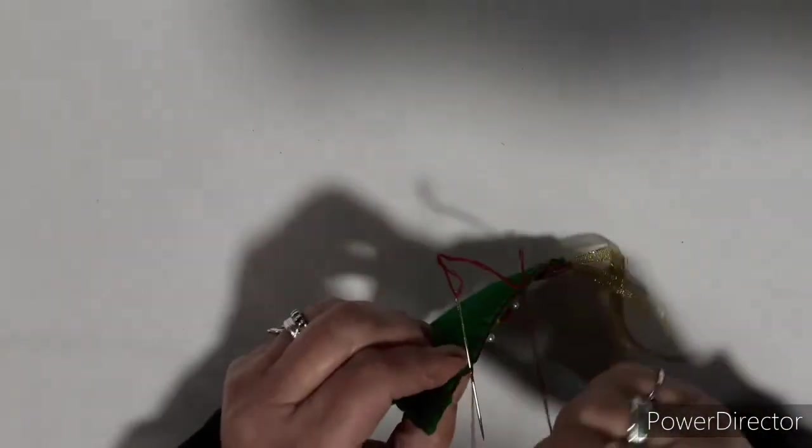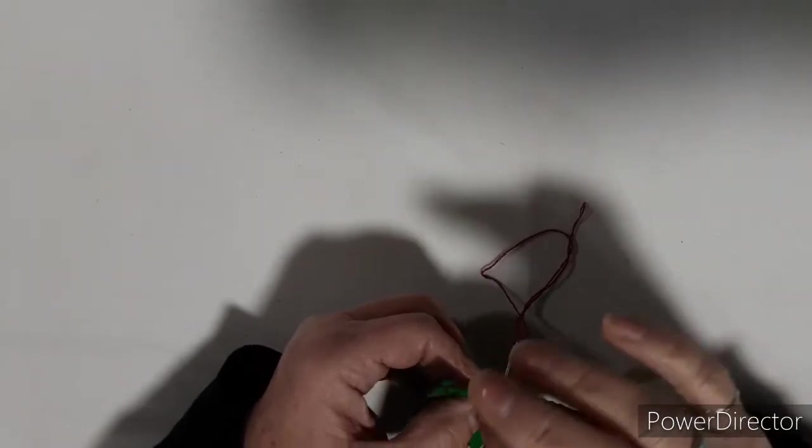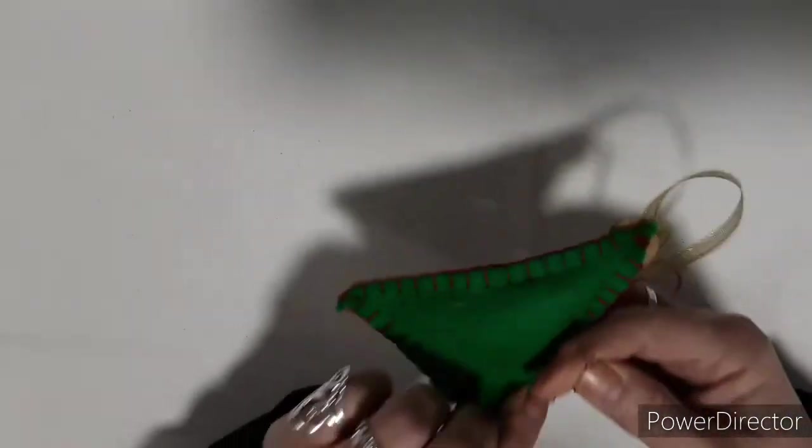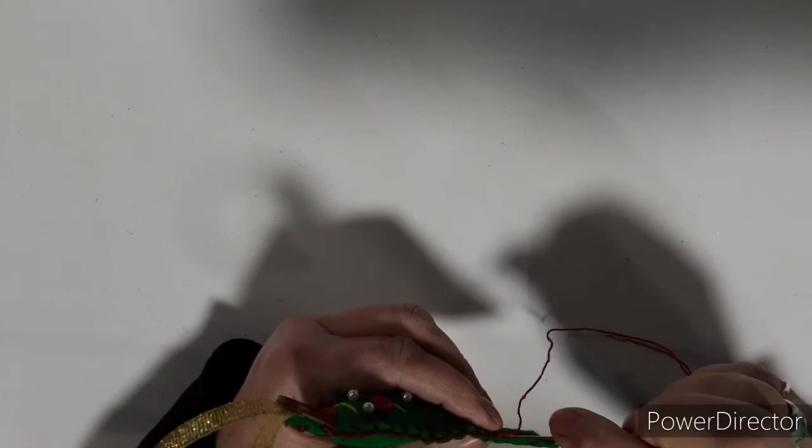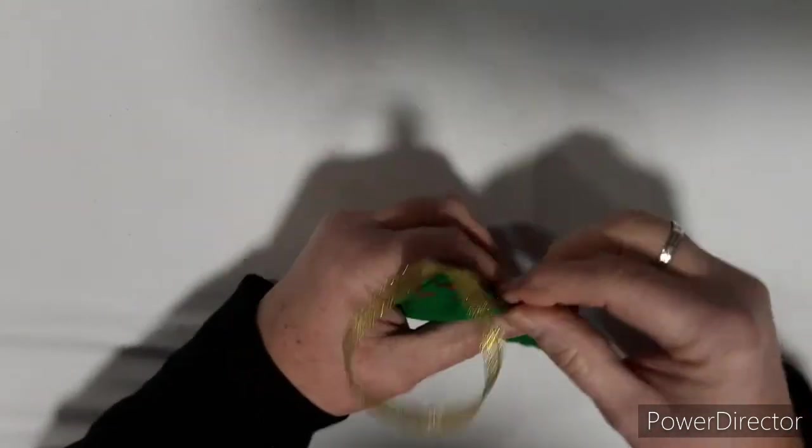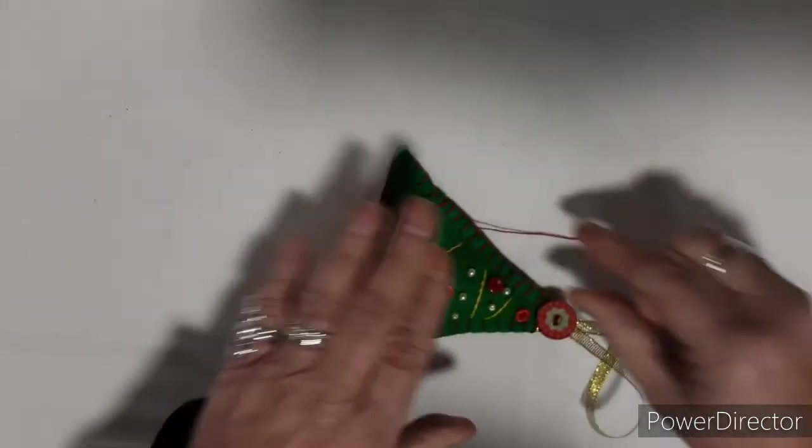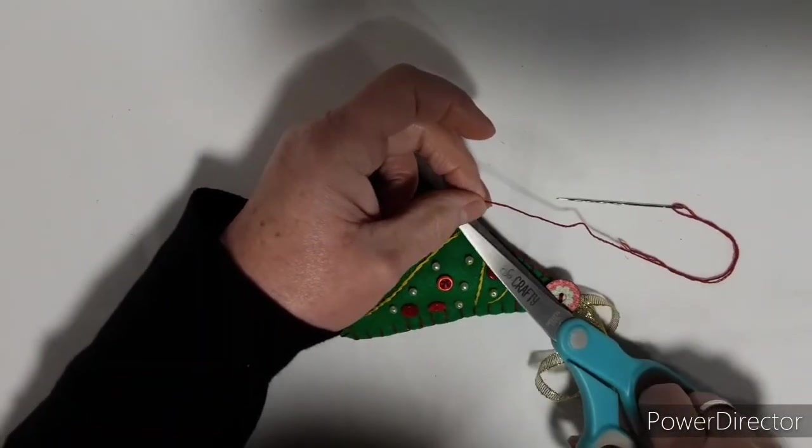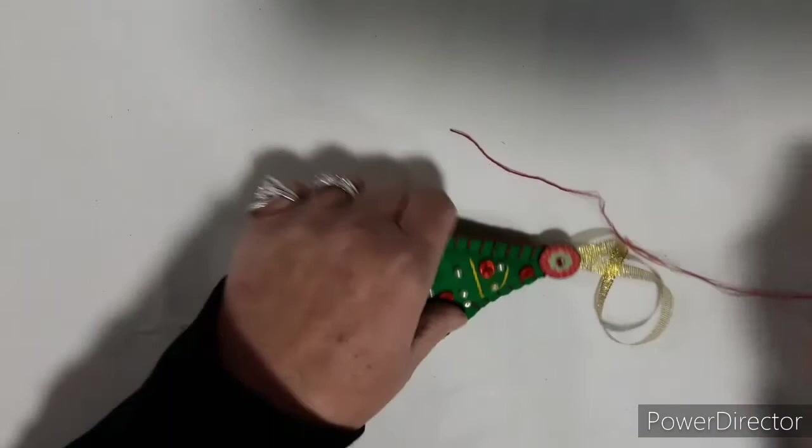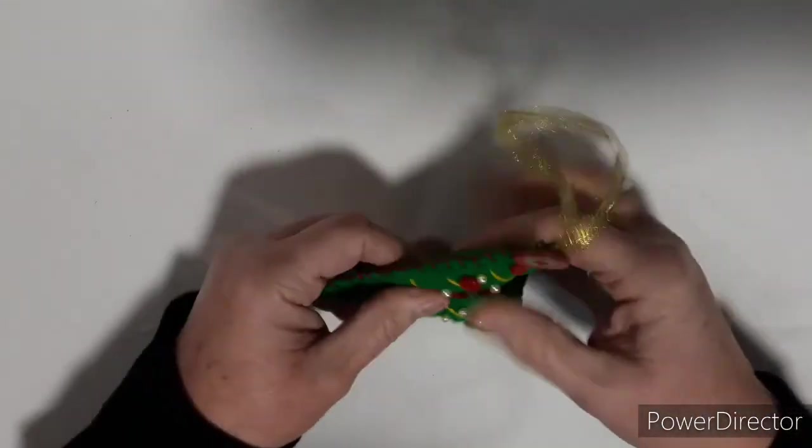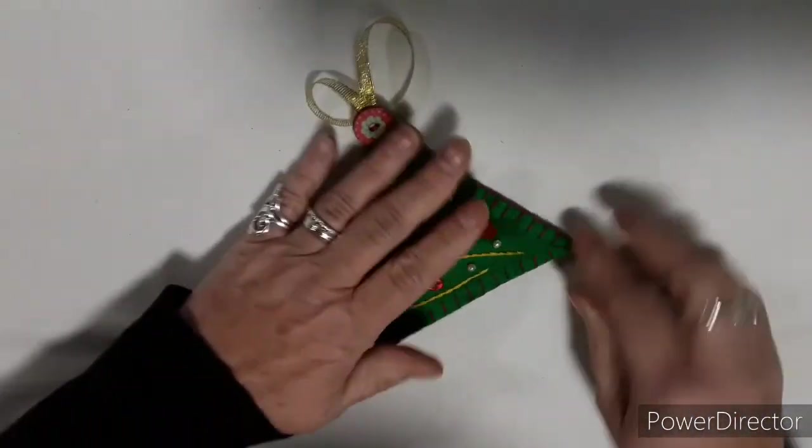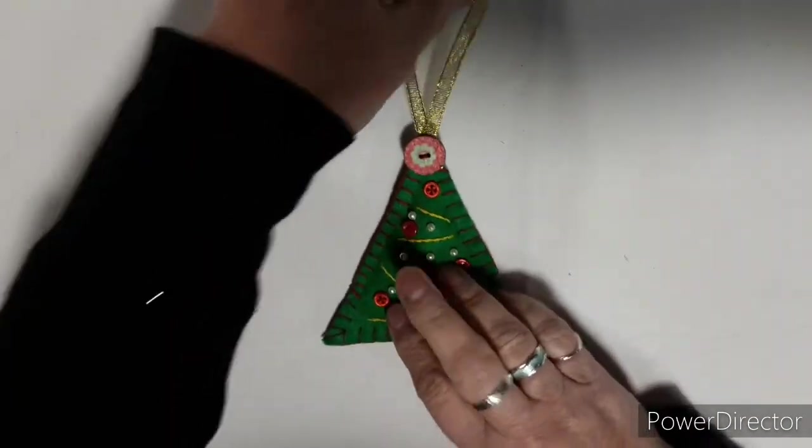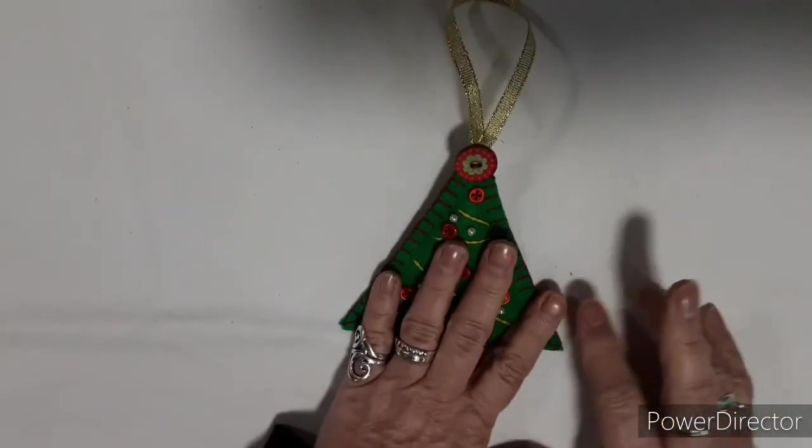Just catch it again, wrap it round, just make a little knot. That'll make sure it doesn't come undone. Stick your needle in and tuck it through so that the thread will actually go inside. And snip. There we go. Our little felt Christmas tree, Christmas decoration.